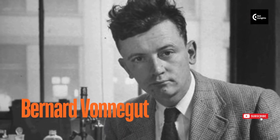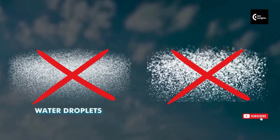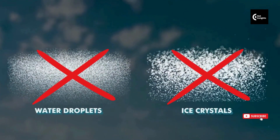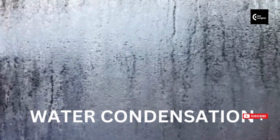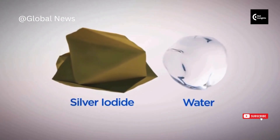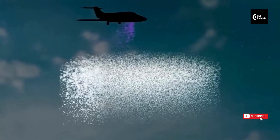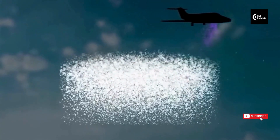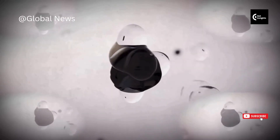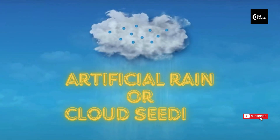Did you know there was another scientist, Bernard Vonnegut, working on cloud seeding alongside Dr. Schaefer? He had a different approach. Instead of using dry ice to cool clouds, he wanted to use chemicals. His idea was simple: he focused on water condensation and experimented with chemicals like silver iodide. He found that silver iodide is great for attracting water vapour. Silver iodide is sprayed onto clouds, helping tiny droplets stick together and get heavy enough to fall as rain. This is artificial rain, or cloud seeding.